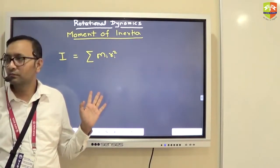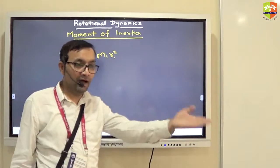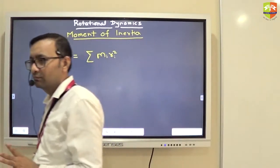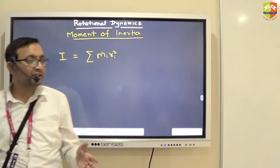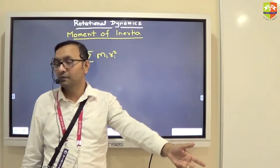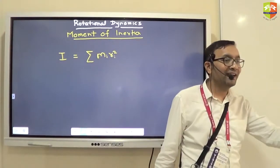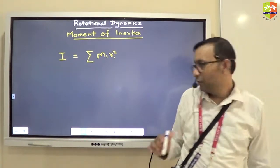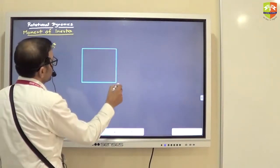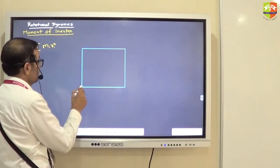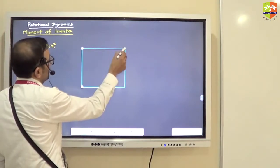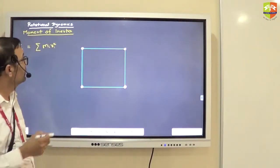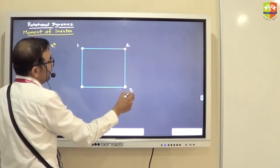Any doubt? It is a scalar quantity — just like mass, it is also inertia, so it is a scalar. You don't need to worry about its direction. But yes, moment of inertia depends on which axis you are finding it about. Even though it is not a vector, it depends on the axis for which you compute the moment of inertia. Now let's try to do a small example: consider a square with corners labeled 1, 2, 3, 4.